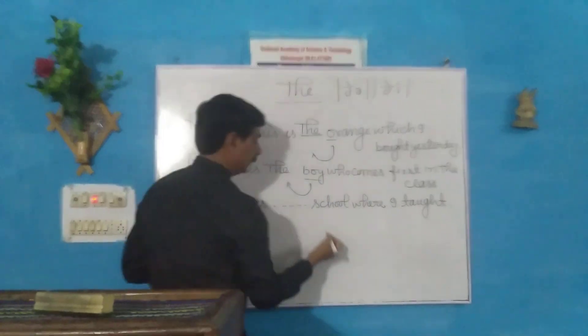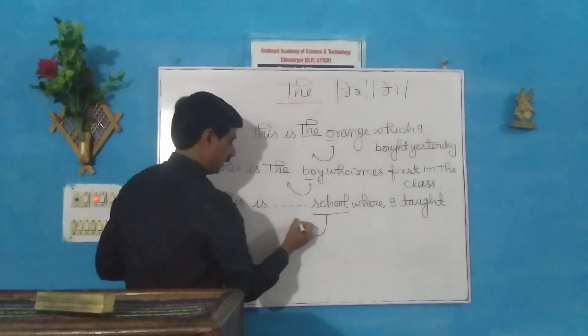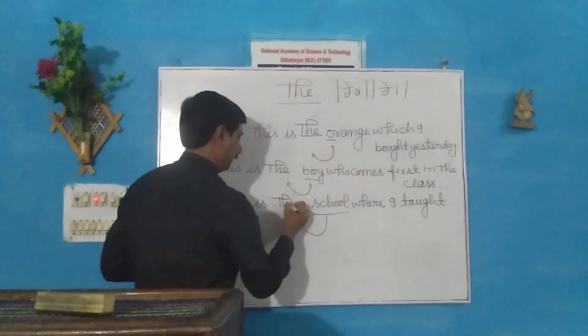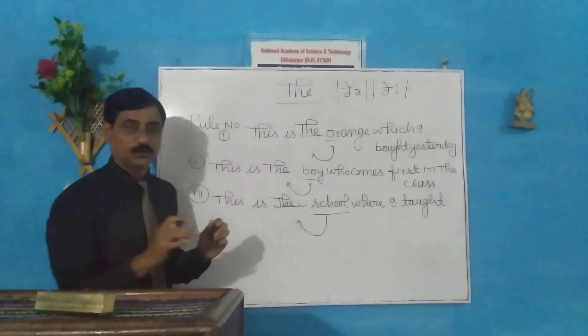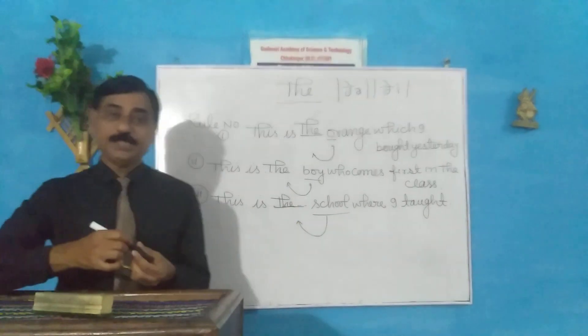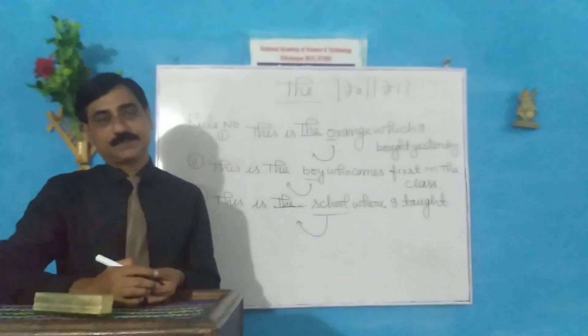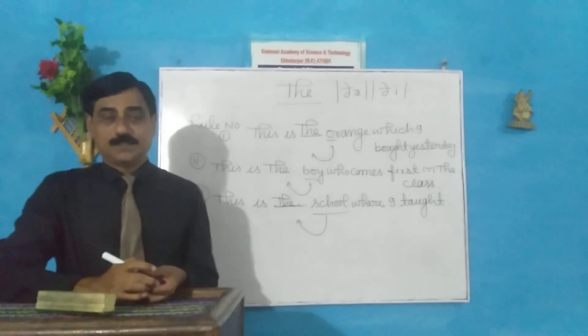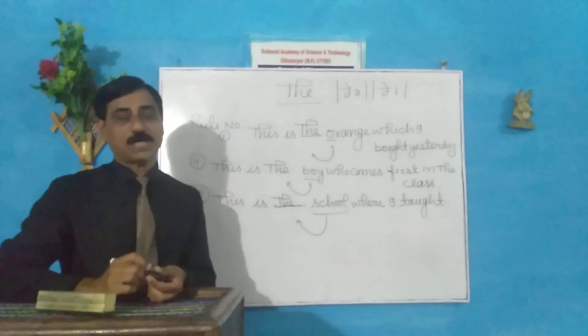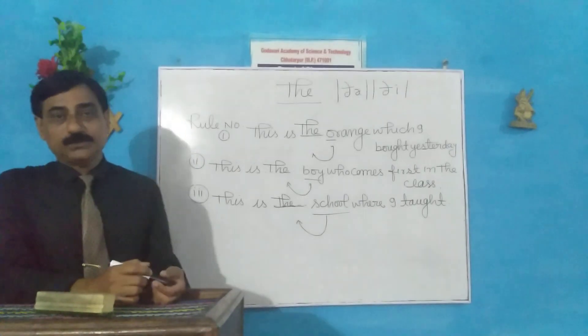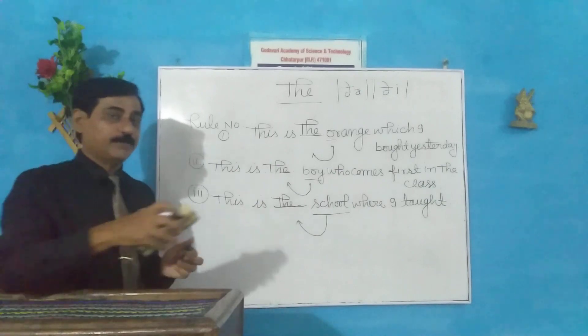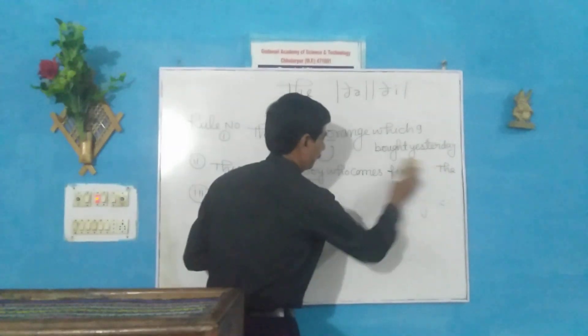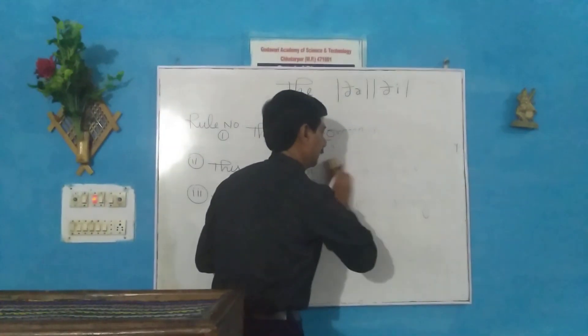Here, particular school, that's why the will come. Number 2: The is used before unique things. The sun, the moon, the sky, the earth. For unique things, we always use the definite article the.